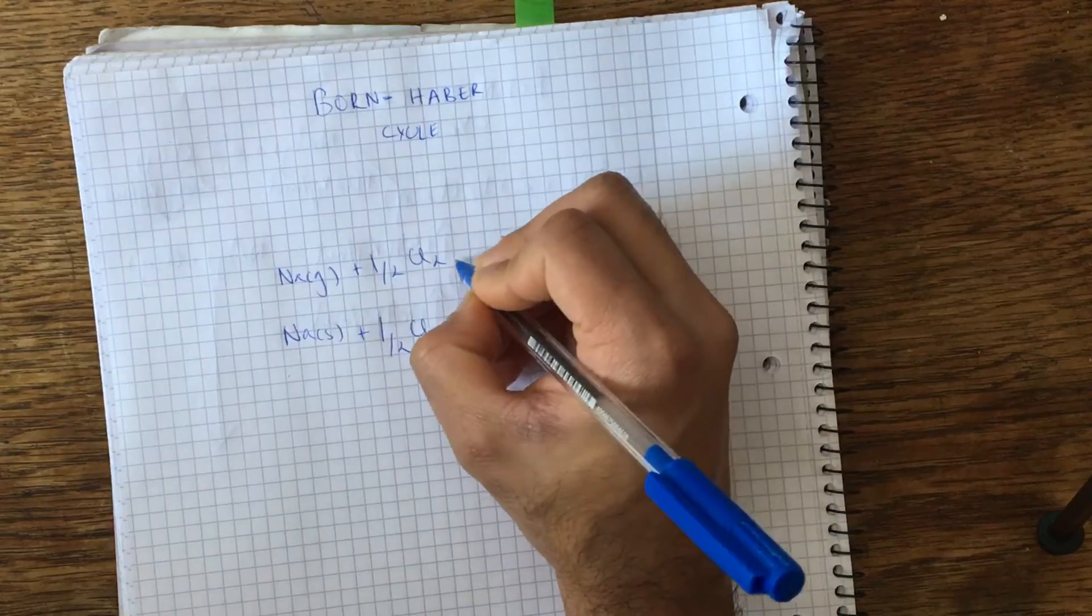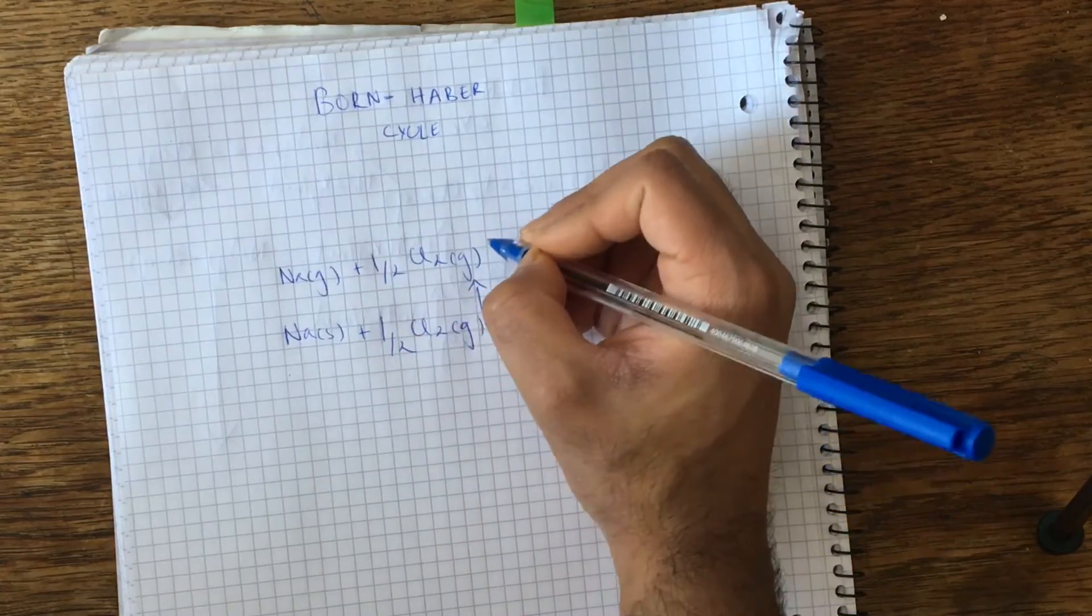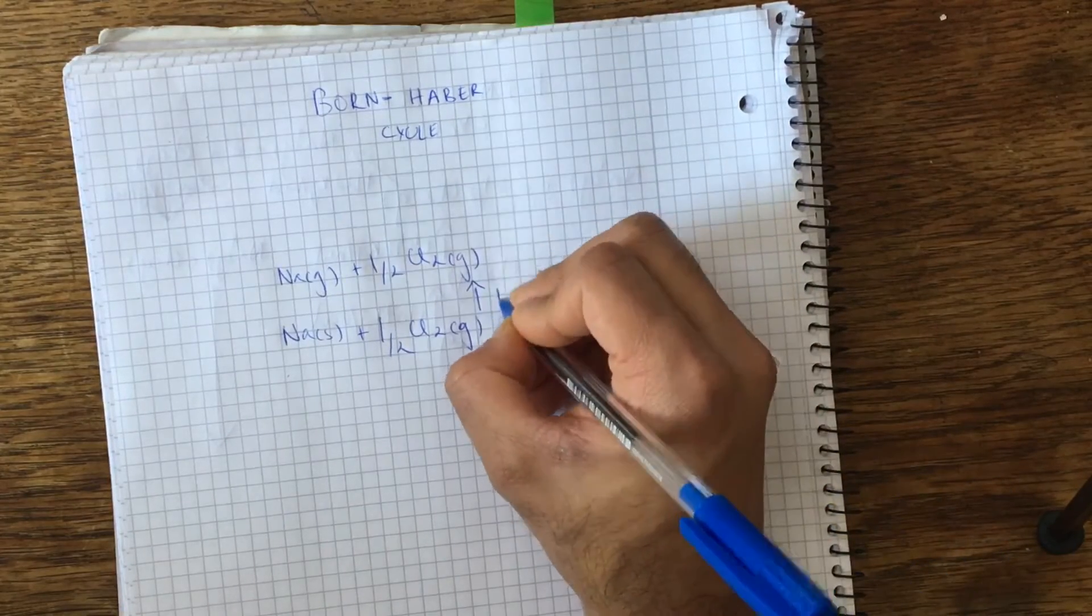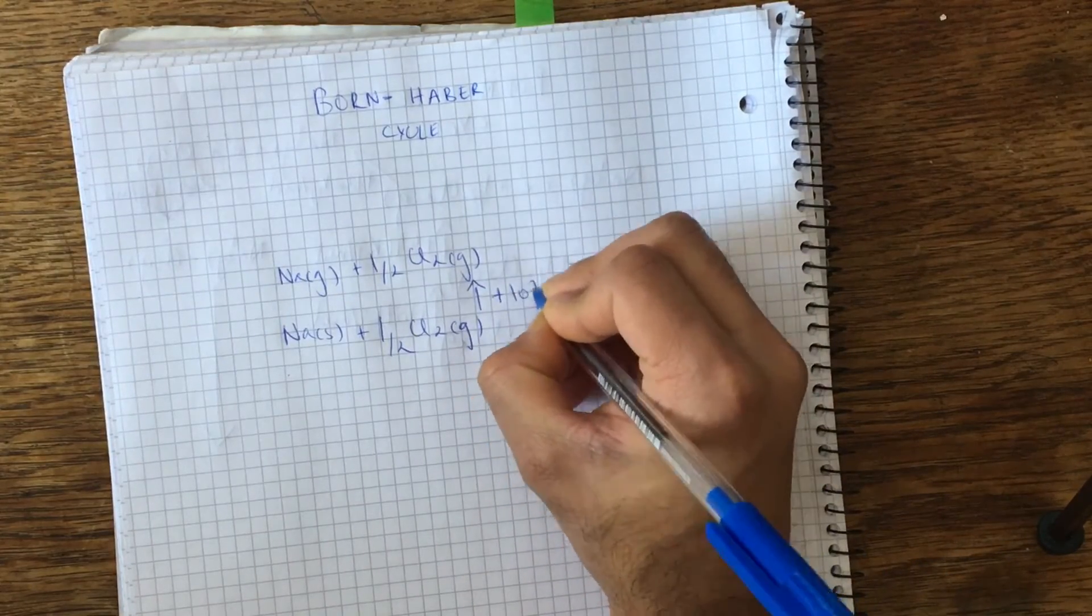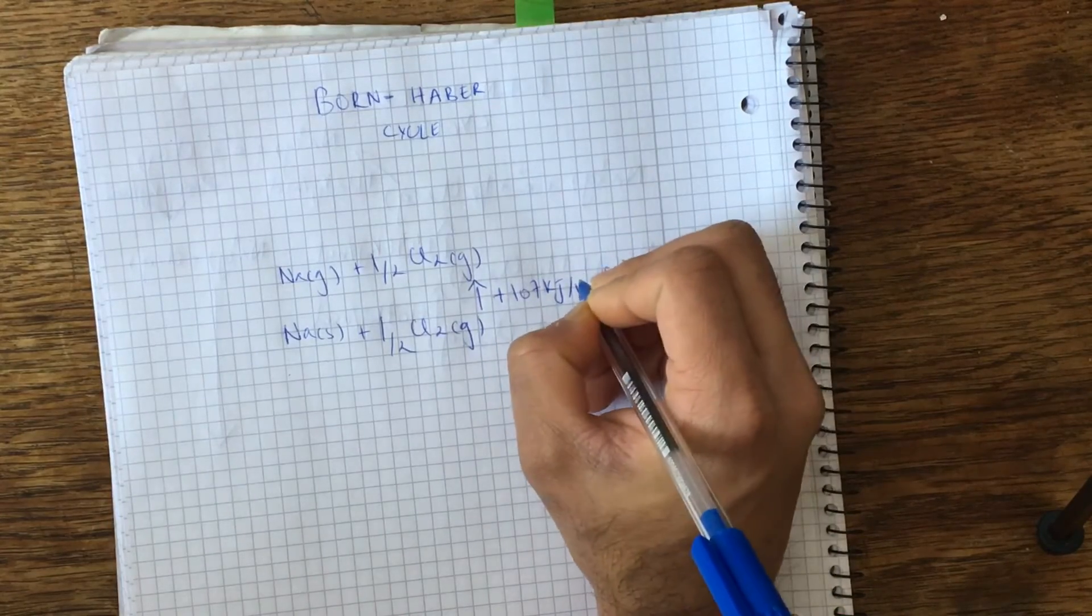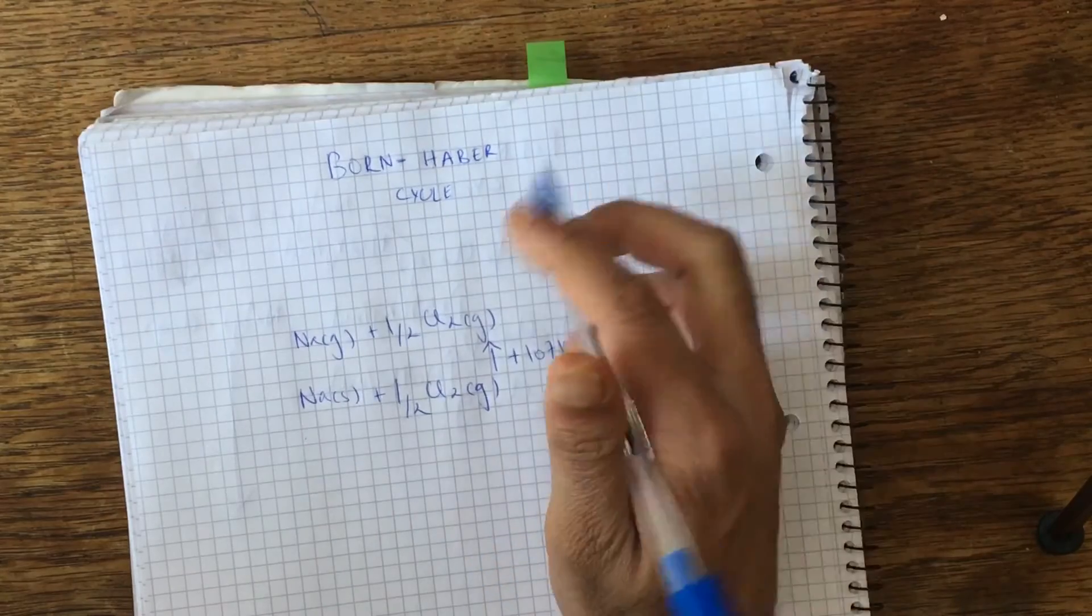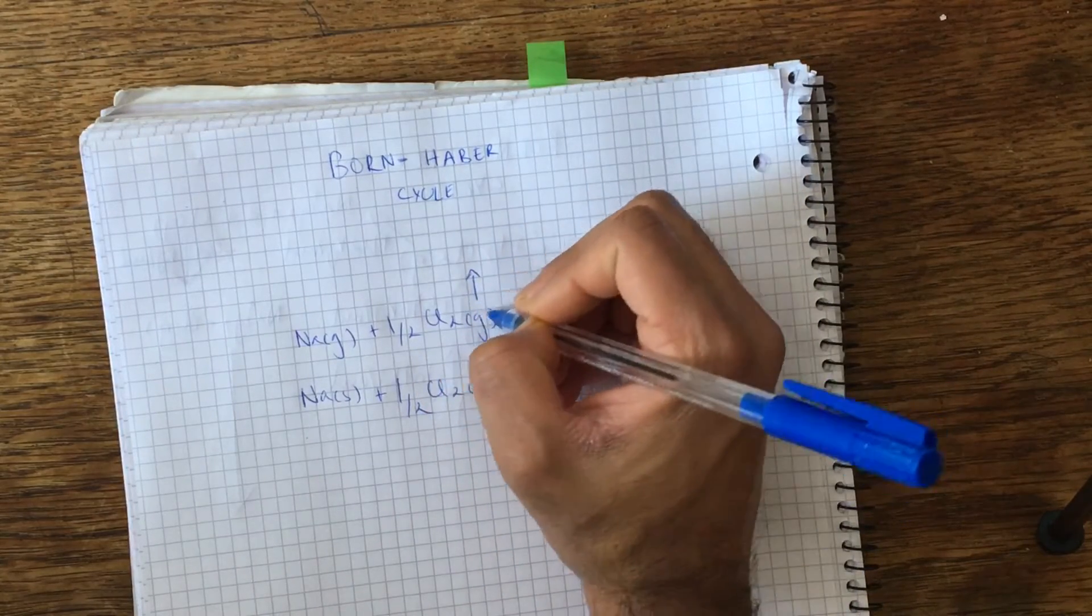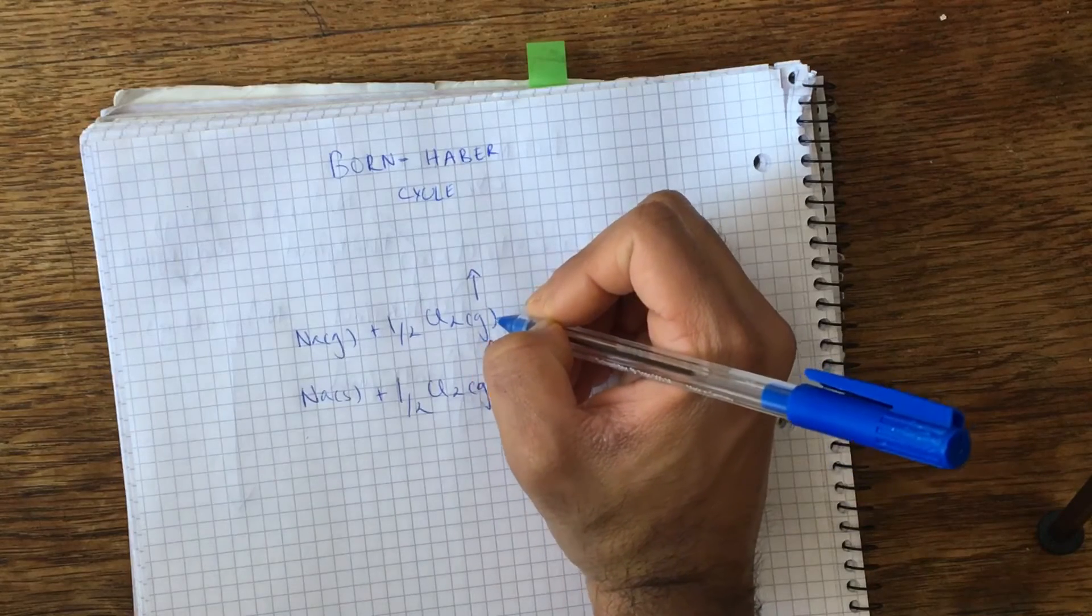And this energy change is called the atomization enthalpy of sodium, which is plus 107 kilojoules per mole. And after that, we're going to convert the atom and sodium to its ionic state.